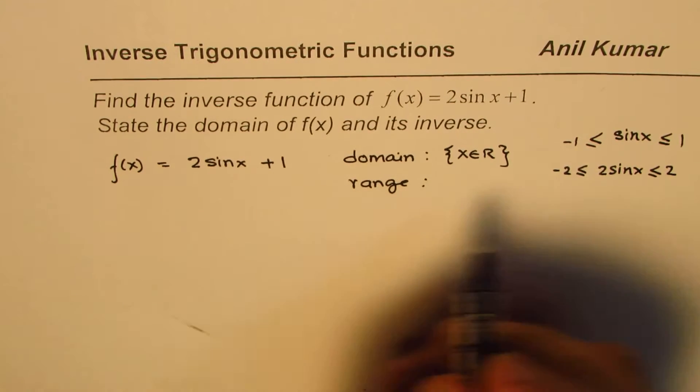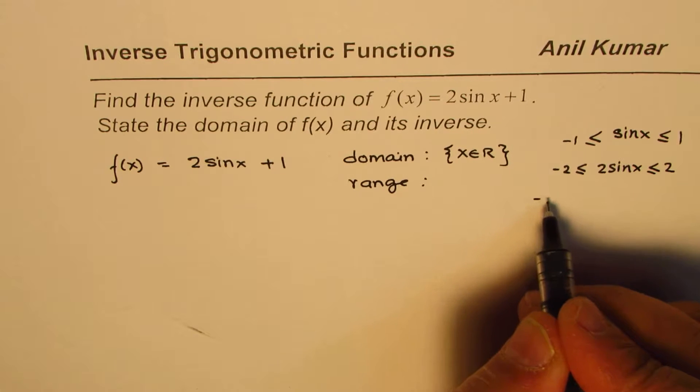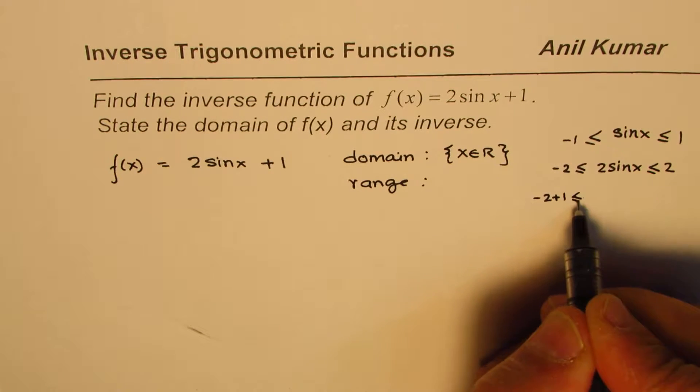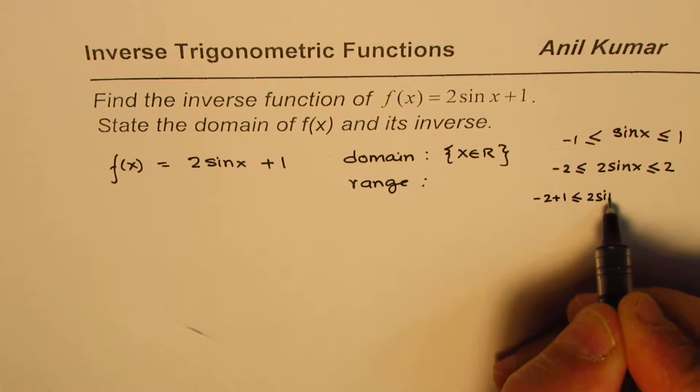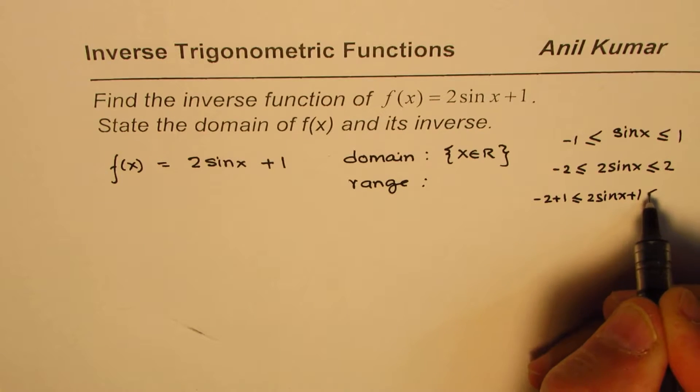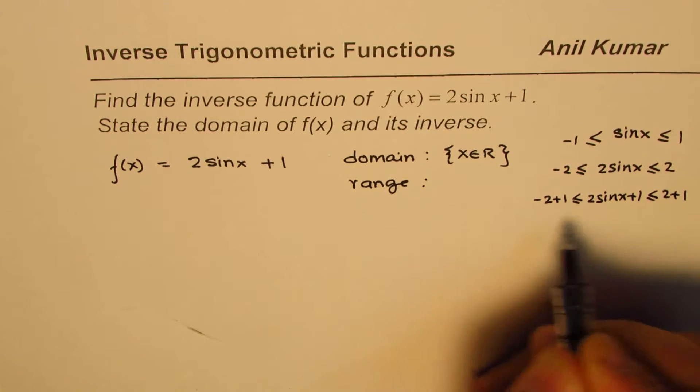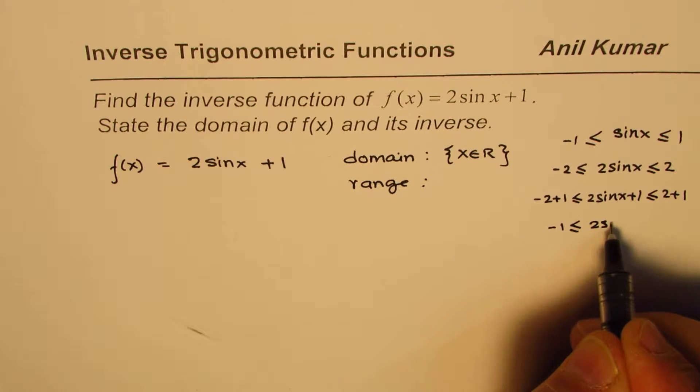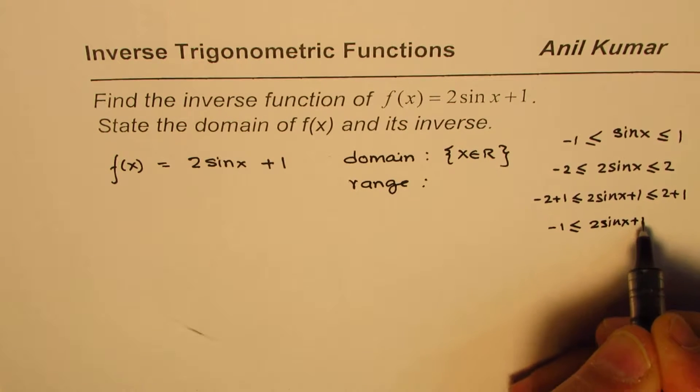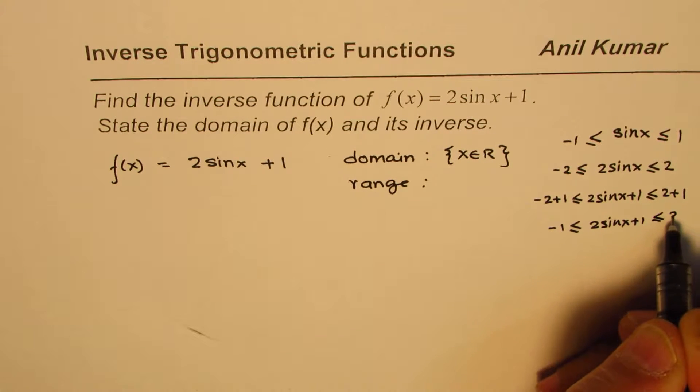It is 2sin(x) + 1, so we will add 1 now. So, it is -2 + 1, 2sin(x) + 1, less than or equal to 2 + 1, and that gives us -1, 2sin(x) + 1, and 3.